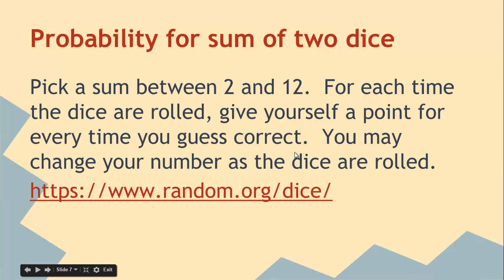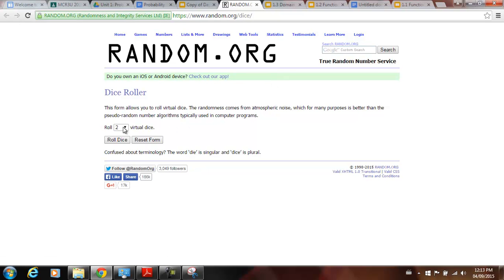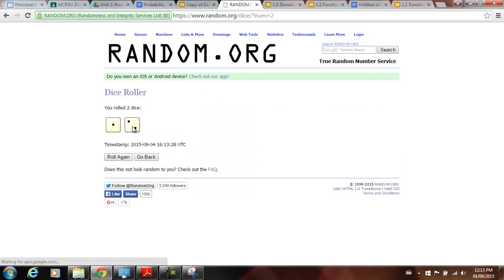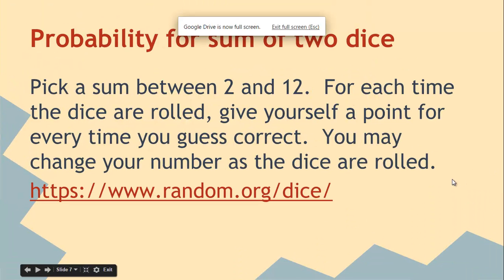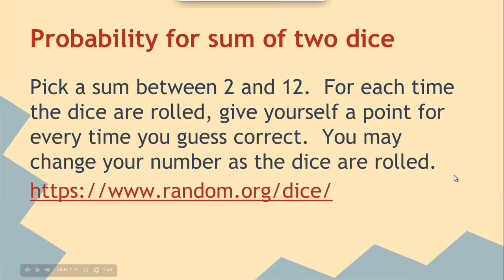I just want to show an example of rolling two dice. We're going to pick a sum between two and twelve, and for each time the dice are rolled, give yourself a point for each time you guess correct. You may change your number as the dice are rolled. There's a website called random.org where you can roll two dice — rather than actually rolling dice, you get a sum. Roll again, you get a sum of eight. Roll again, you get a sum of seven, and so on.